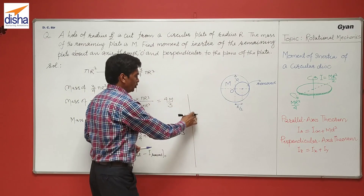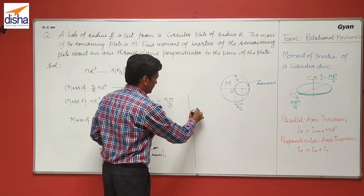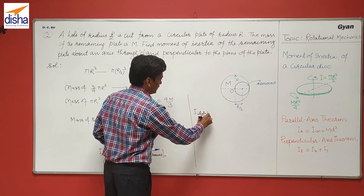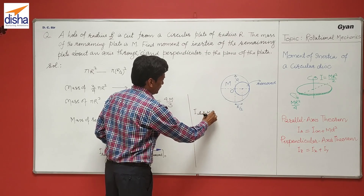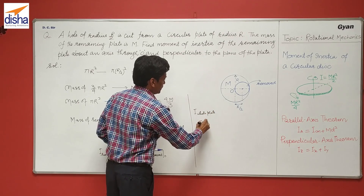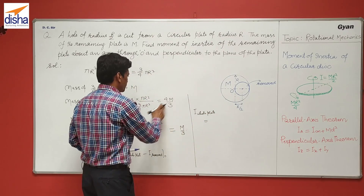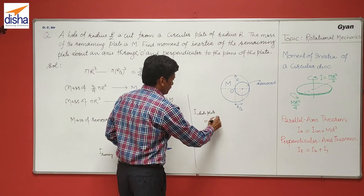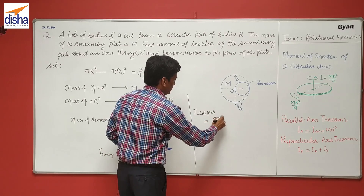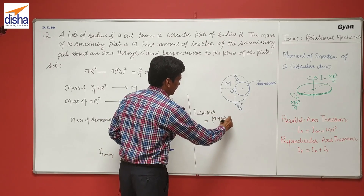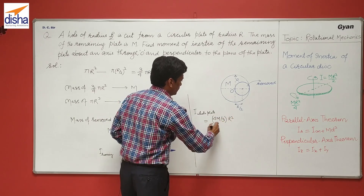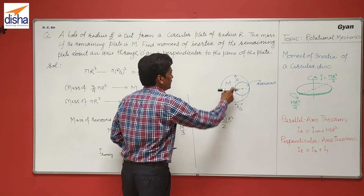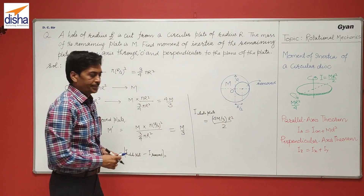The moment of inertia of the whole disk about the center of mass axis equals its mass, which is 4M/3, times R squared divided by 2.